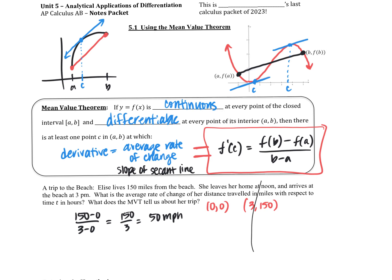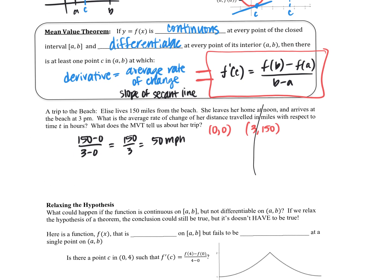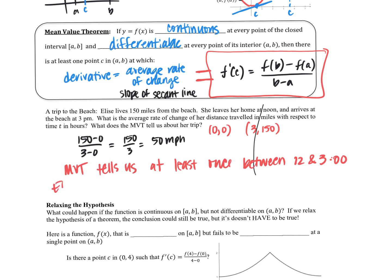Mean value theorem tells us at least once — could have been more, but at least once — between 12 and 3, Elise was traveling exactly 50 miles per hour.